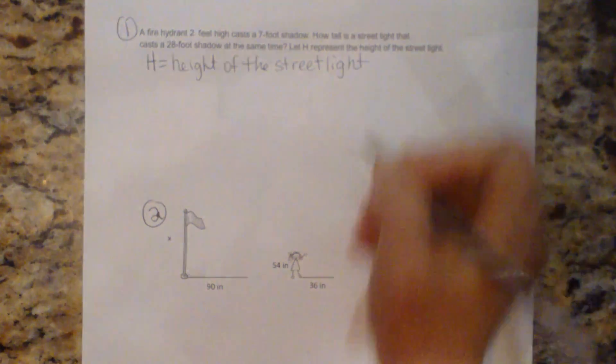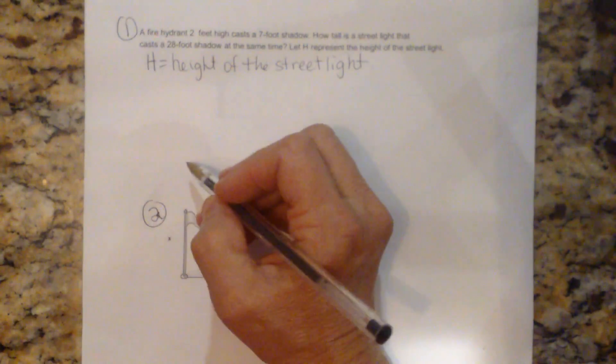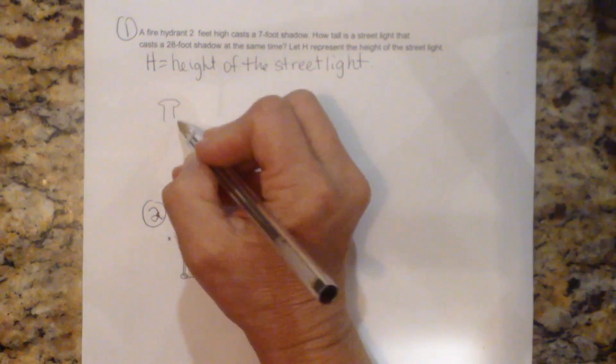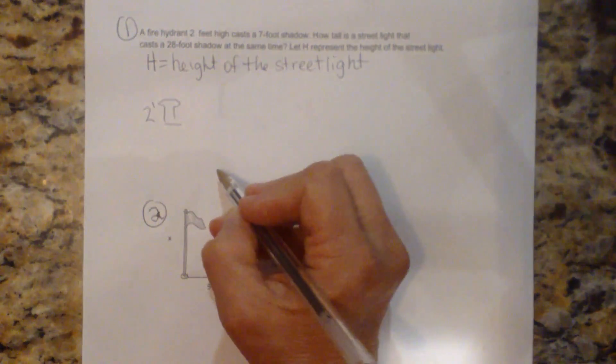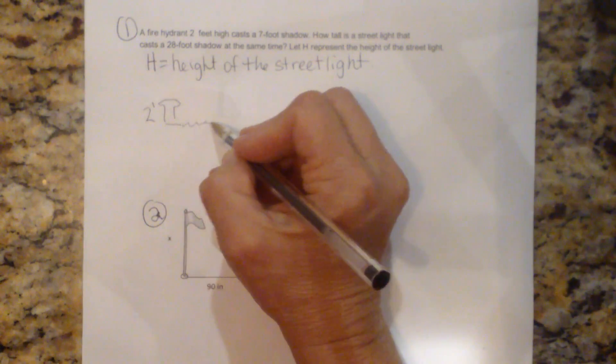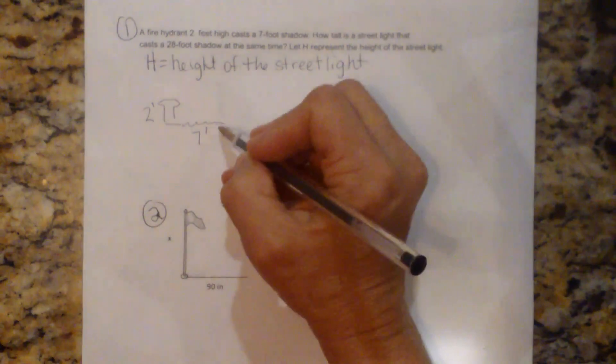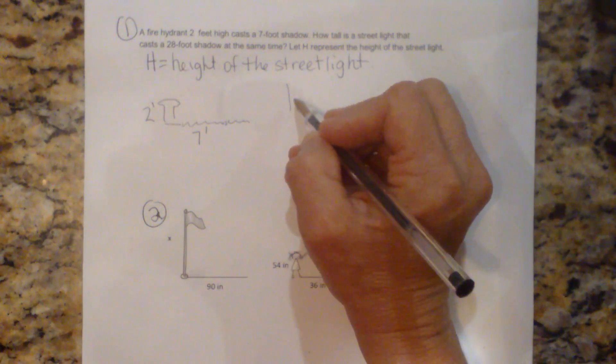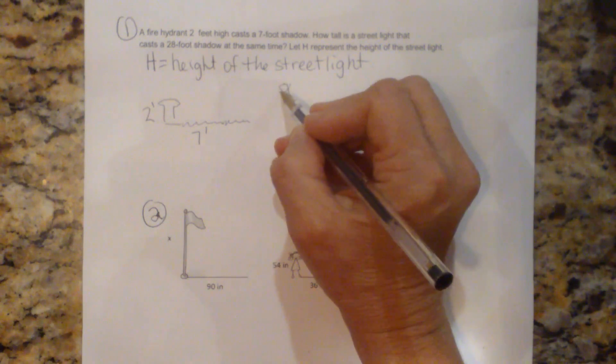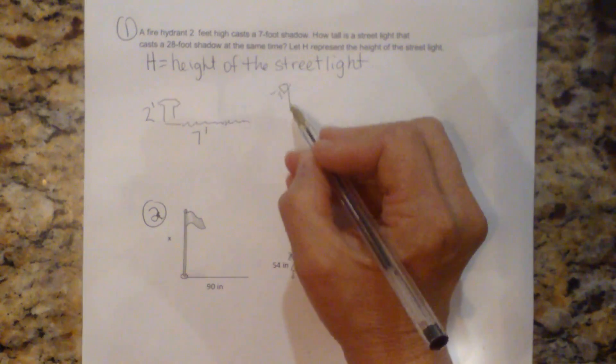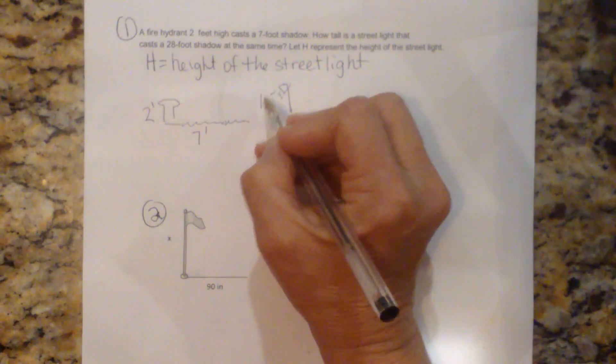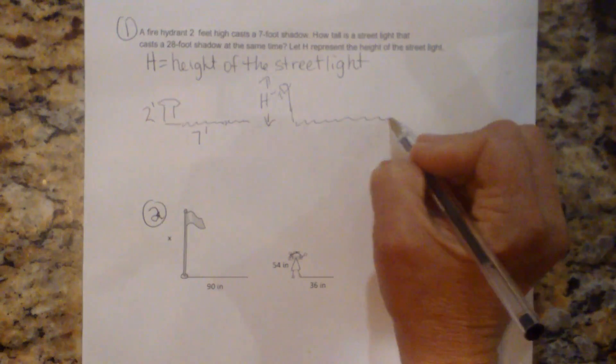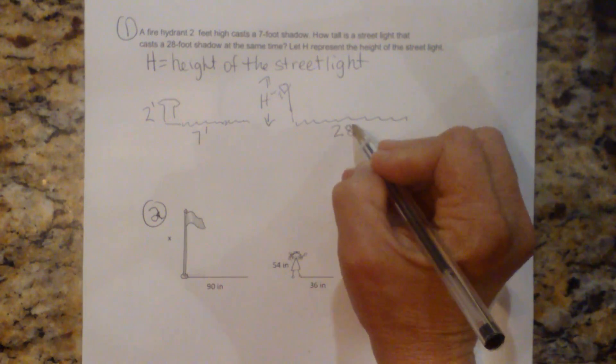And the first thing we need to do after that is draw our picture. So we have a little fire hydrant and it's only two feet high. But it casts a shadow that's seven feet long. So it's quite a long shadow. And then we have a street light. And it is an unknown height. That's our h. Our h is this side. And it's casting a 28 foot shadow.